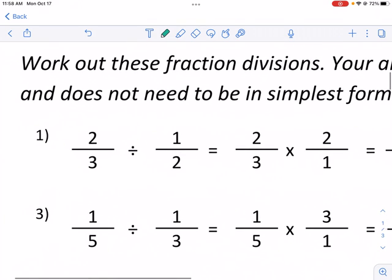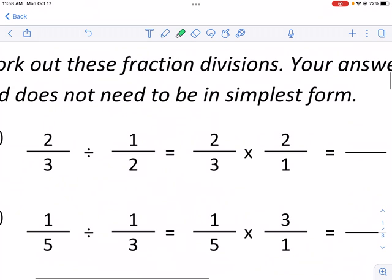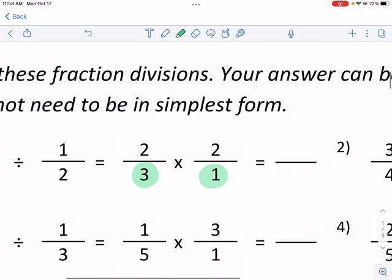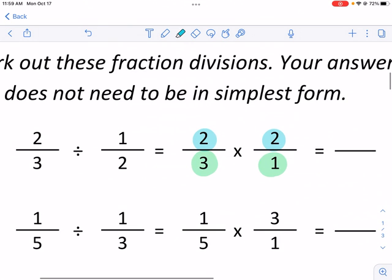So here we have 2 thirds divided by 1 half. It's tough to think about mathematically, but if we change it into a multiplication problem, it becomes fairly simple algorithmically. So first we have the denominators there, 3 and 1. And notice how we change this guy. So I'm going to make sure I highlight this.